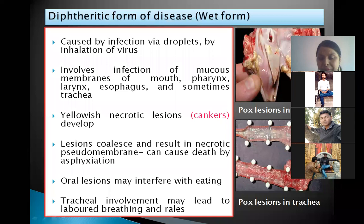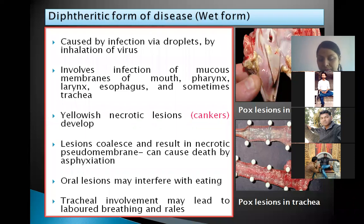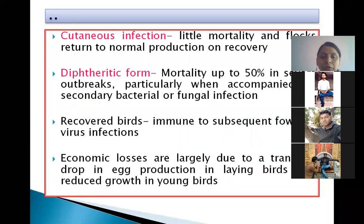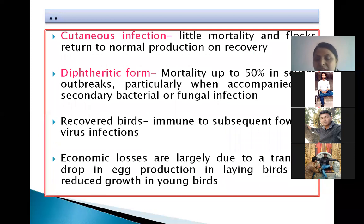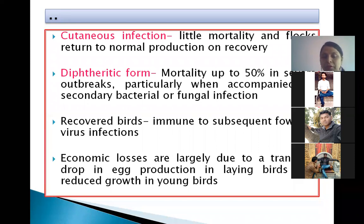Oral lesions interfere with eating. Tracheal involvement may lead to labored breathing and rales, which are abnormal lung sounds. When poultry have a cutaneous infection, it causes little mortality and flocks return to normal production on recovery. But the diphtheritic form mortality is high and may reach up to 50%, especially when the pox infection is also associated with secondary bacterial or fungal infections. Recovered birds are immune to subsequent pox virus infections.